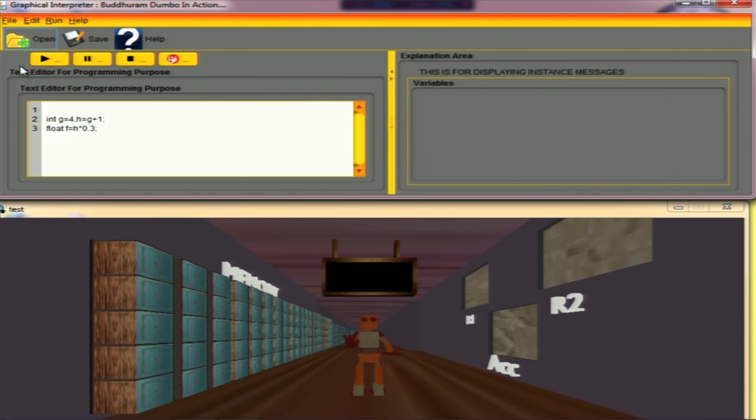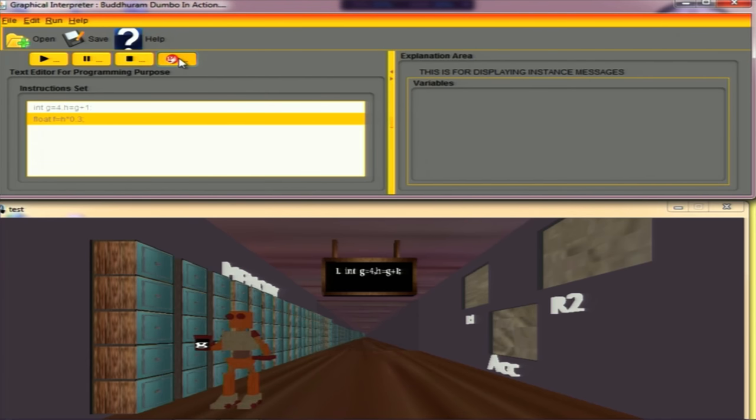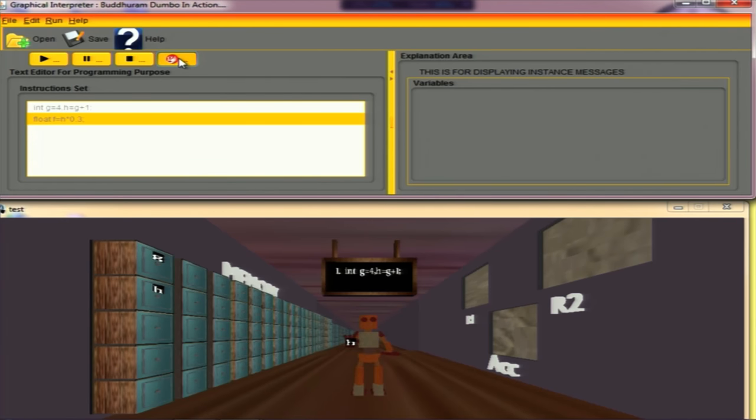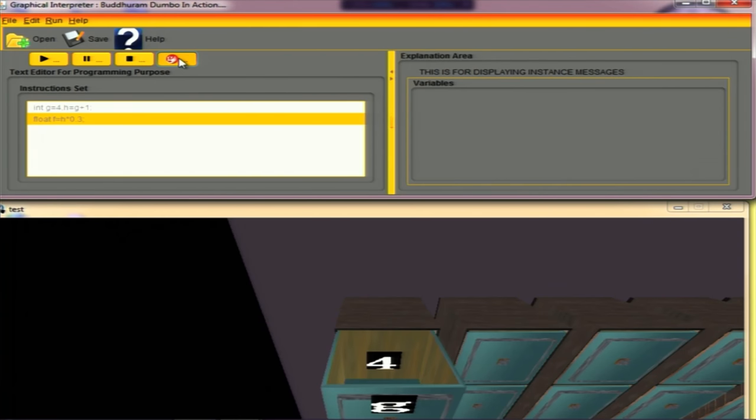The first thing we do is pass the C code into a queue. Now we will parse it and execute each instruction step by step. The first instruction executed and it is shown on the display area. The first is int g equals to 4. So first thing that we will do is label a box with g. Next it will go back to display, get 4 from the display and label the second box.